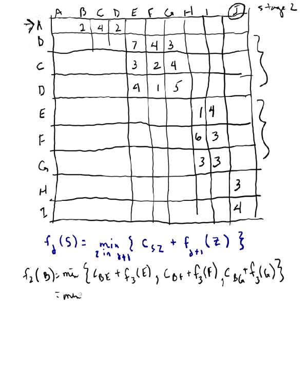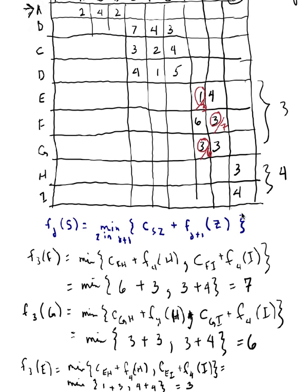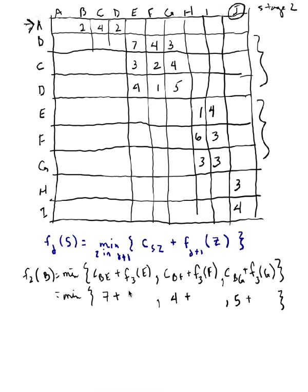So this equals the min, the cost to go from B to E is 7, plus I'll look that up in a minute, the cost to go from B to F is 4, plus that. And the cost to go from B to G is 5, plus that. That's just the cost out of B. Now I need to look up the optimal cost from E, from F, and from G at stage 3. Okay, so from E it's a 3, and then F is 7, and G is 6.